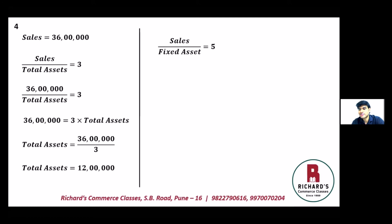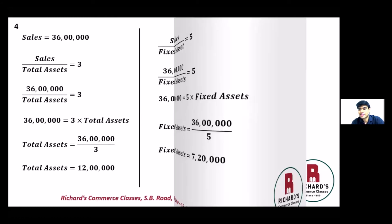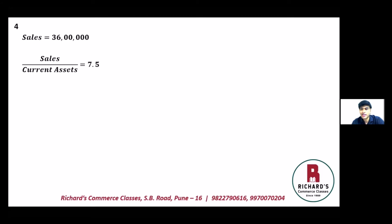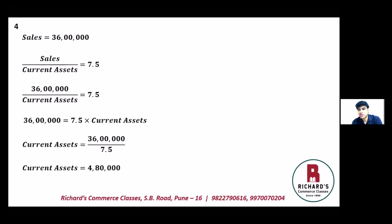Sales to fixed assets: 36 lakhs divided by fixed assets equals 5. So fixed assets equals 36 lakhs divided by 5, which is seven lakh twenty thousand. Sales to current assets: 36 lakhs divided by current assets equals 7.5. So current assets equals 36 lakhs divided by 7.5, which is four lakh eighty thousand. This also matches total assets minus fixed assets.